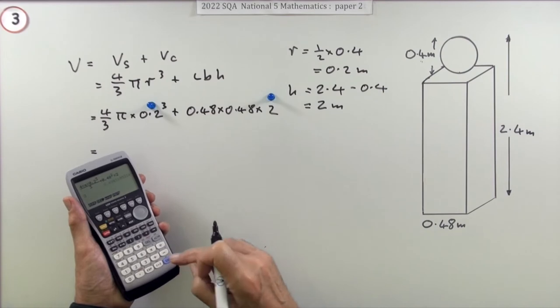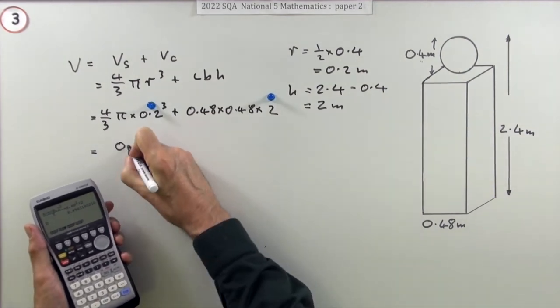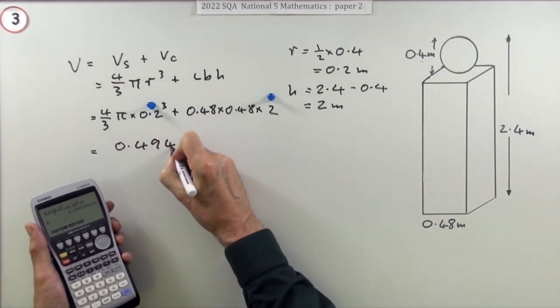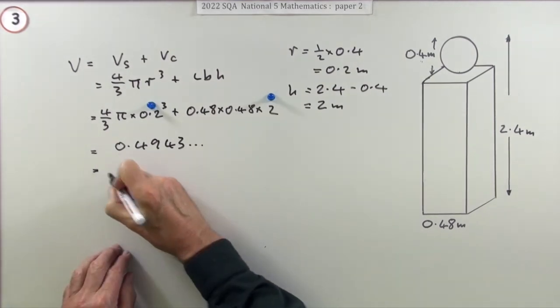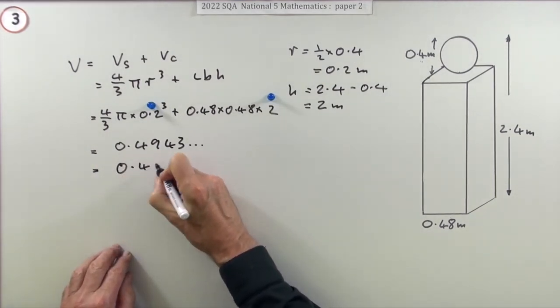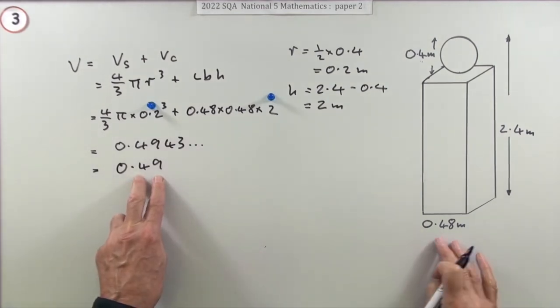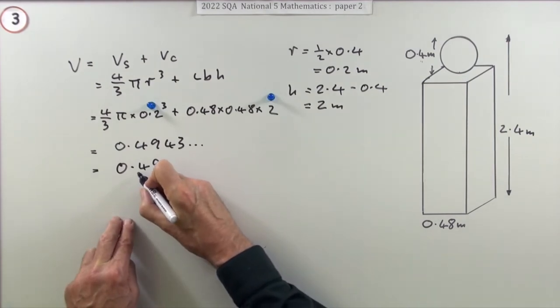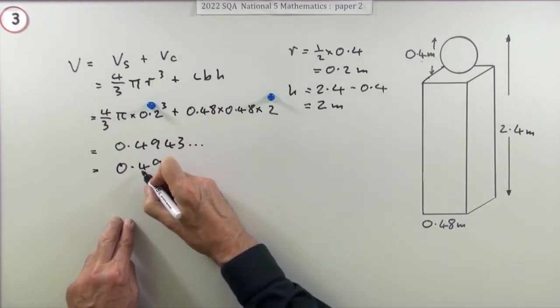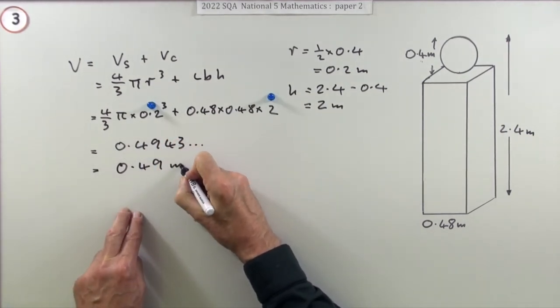Type it in, press the button, and of course you get the same answer: 0.4943. Just round it off appropriately. I'll go for two to match with these, but you could just as validly go for three significant figures and put 494 meters cubed.